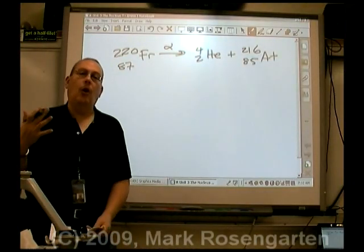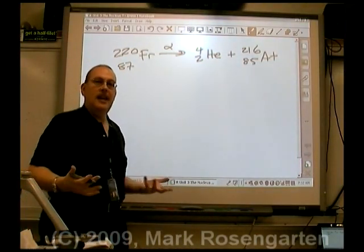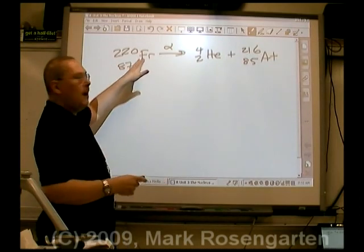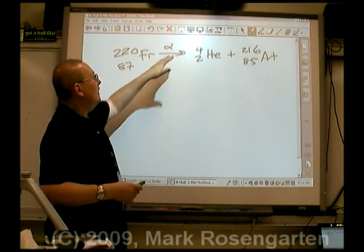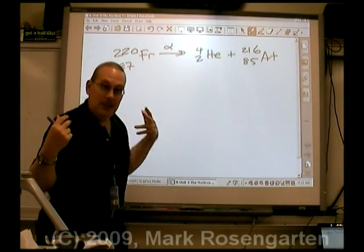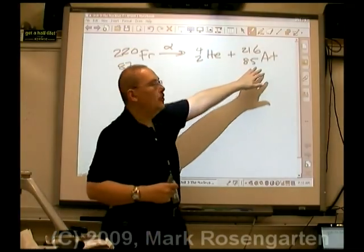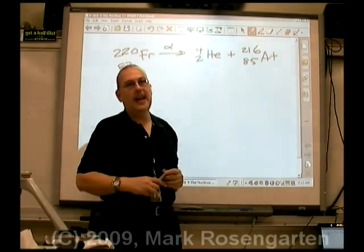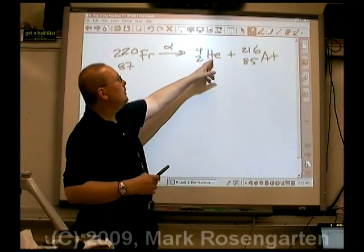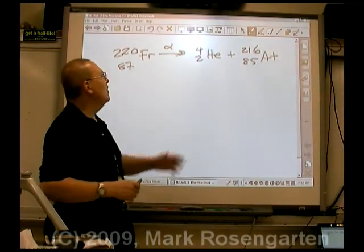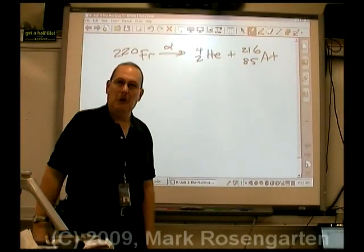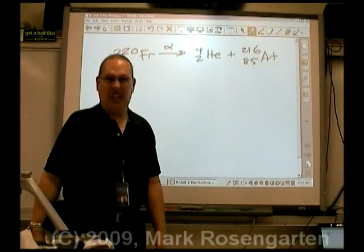So again, that is how all radioactive decay equations get done. You start with your parent nuclide. You've got an arrow that indicates that there's going to be a change taking place. You put the decay particle and daughter nuclide on the same side of the reaction. Imagine, if you had put this on the other side of the reaction, you're saying that Francium is eating its own vomit. That's disgusting!